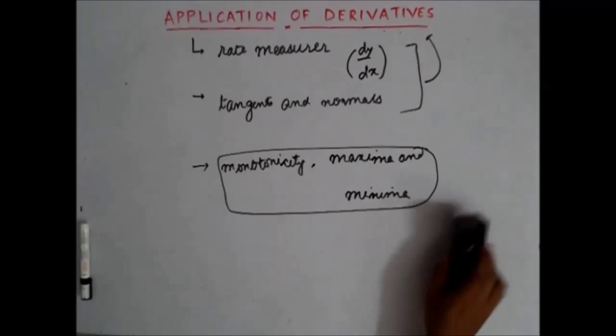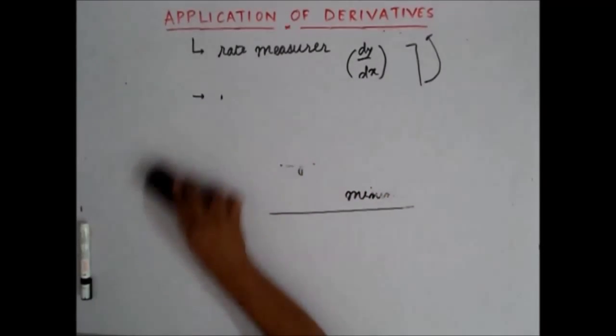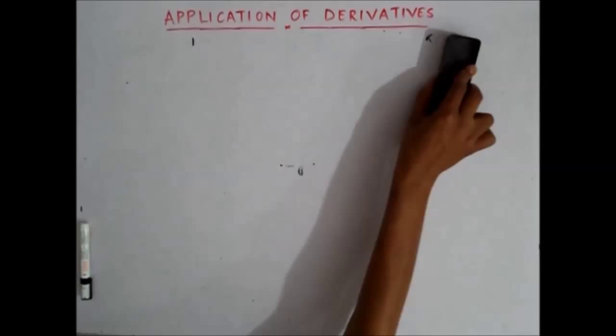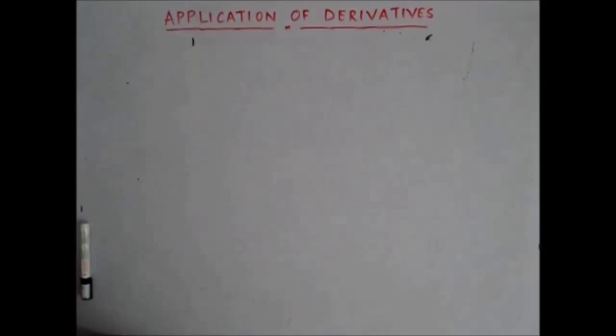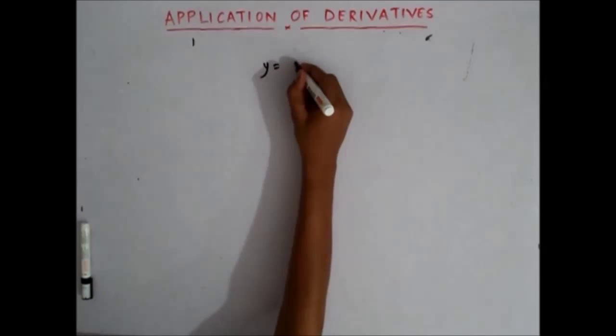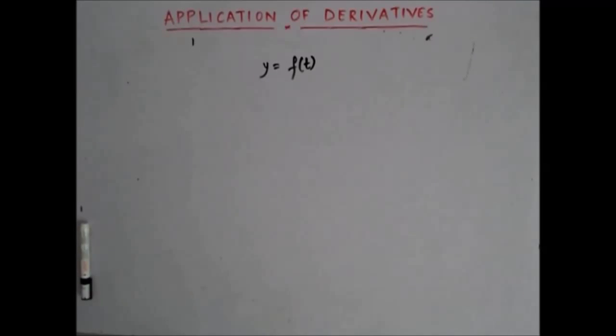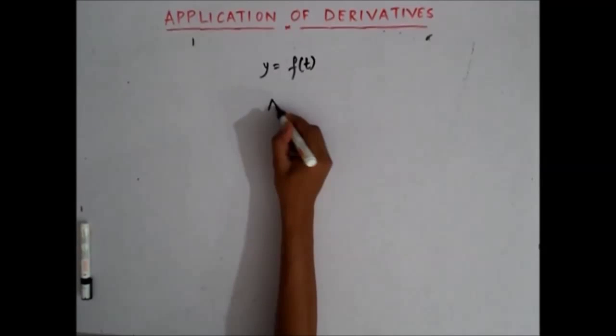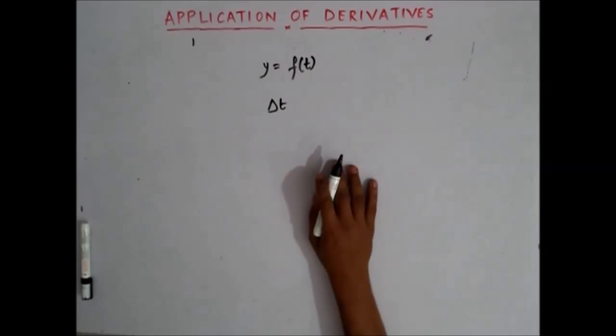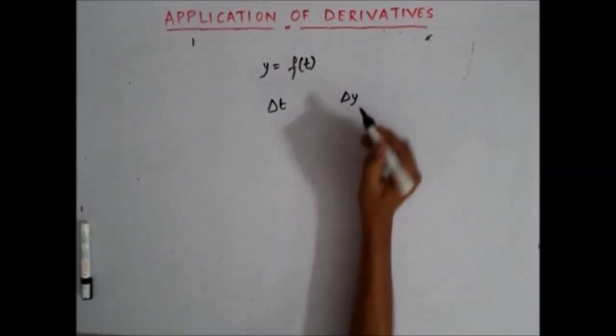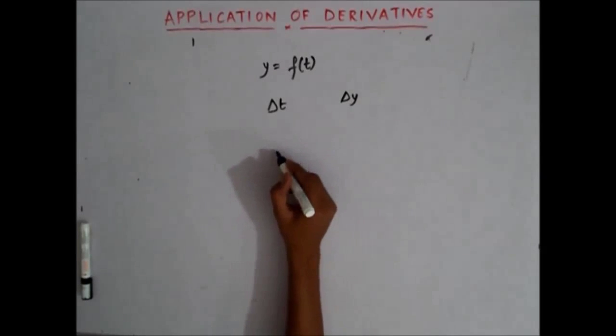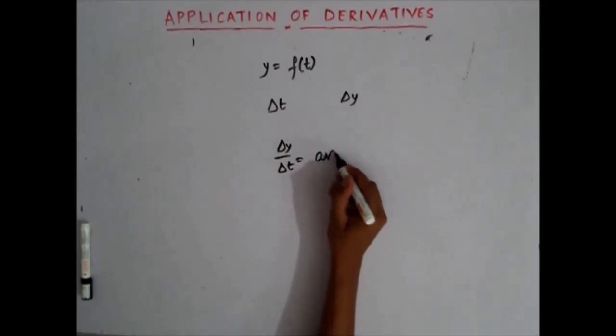So let's begin with the first part, let's see how dy by dx is used as a rate measurer. Let's say I have a function y equals to f(t). Now in this function, if there's a delta t change in t, delta t change in t will bring about a delta y change, and such that delta y by delta t is nothing but the average rate of change.